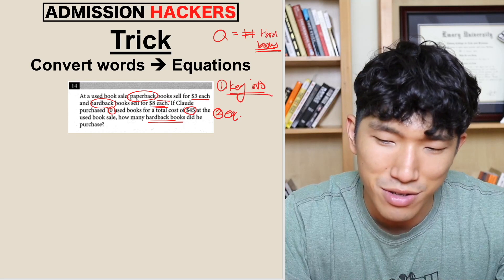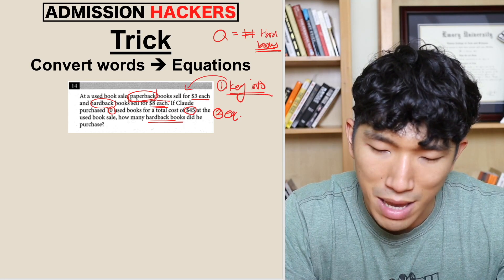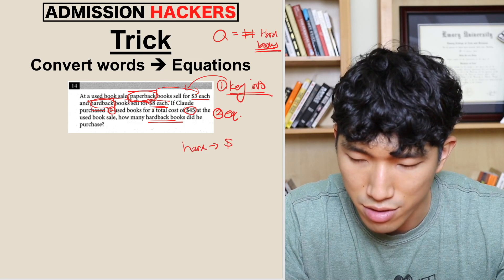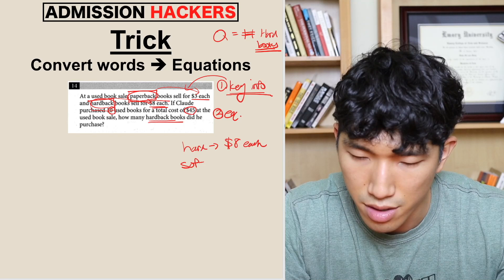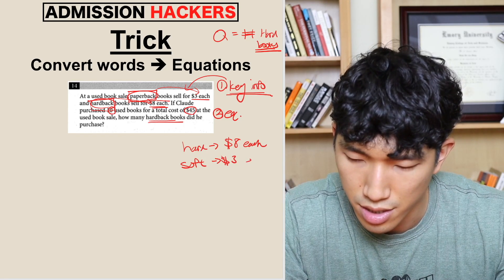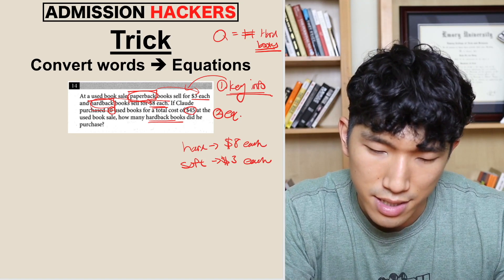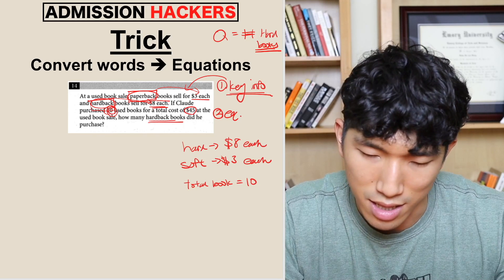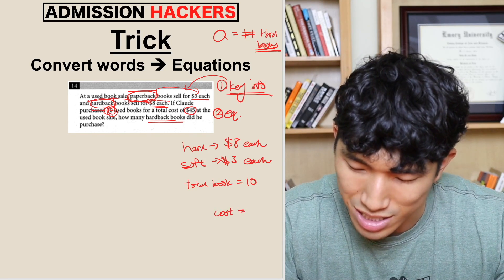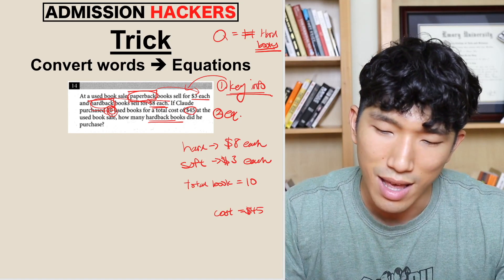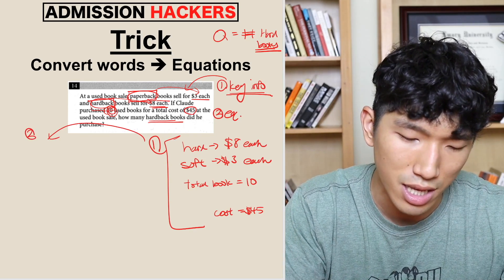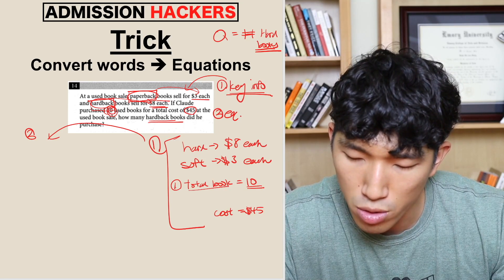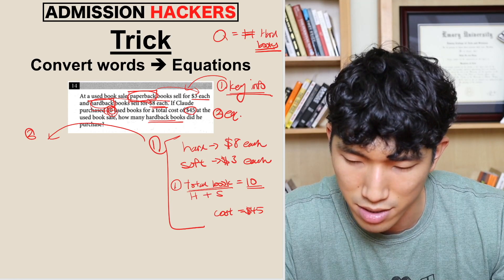The first thing we have to do is identify key information. We know that paperback is $3 each and hard books are $8 each. Hard books = $8 each, soft books = $3 each. Another thing the question tells us is that the person purchased 10 books total, so total books = 10. And the total cost is going to be $45. Based on this key information, we're going to create equations. Our first equation is based on the total number of books: hard books plus soft books equals 10. So equation one: H + S = 10.